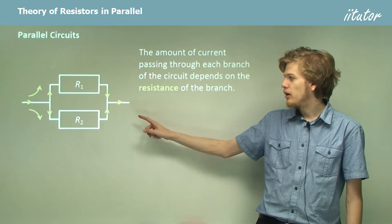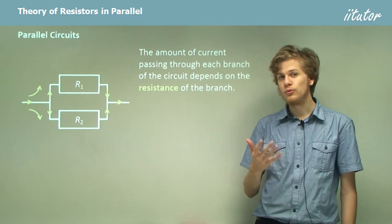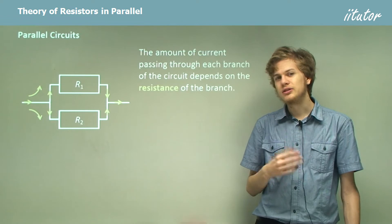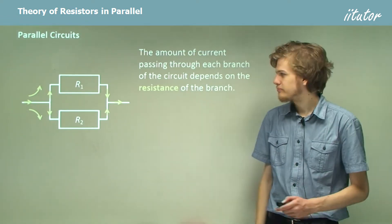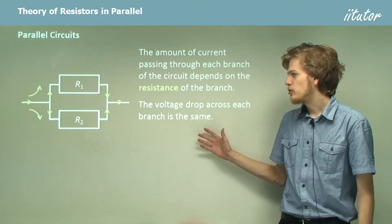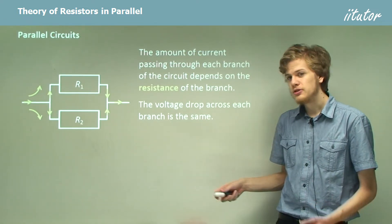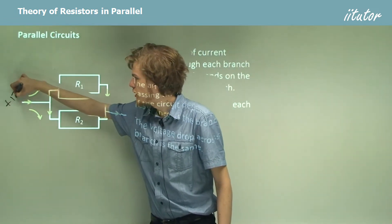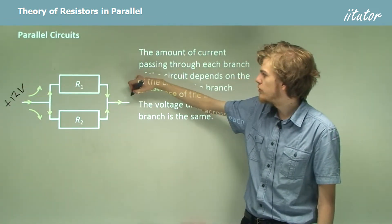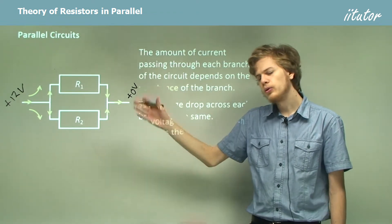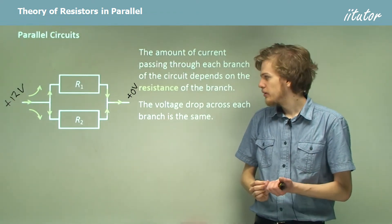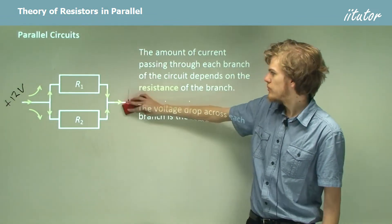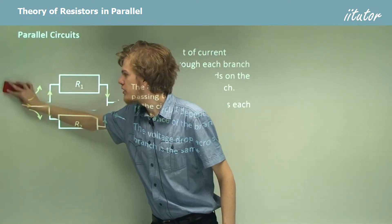The amount of current that passes through each branch will depend on the resistance of the branch. So if R1 and R2 are the same, the same current will flow through them. If R1 and R2 are different, that will change the amount of current that flows through each one. The voltage drop across each branch is the same, because if we have a power source with a potential of plus 12 volts on one side and zero on the other, the voltage does not drop across any of the wires.